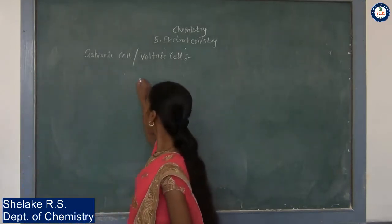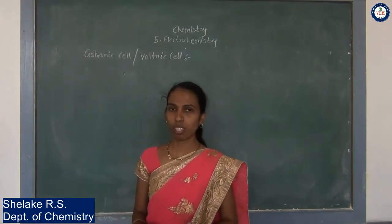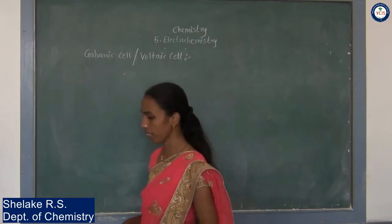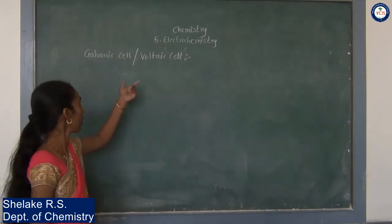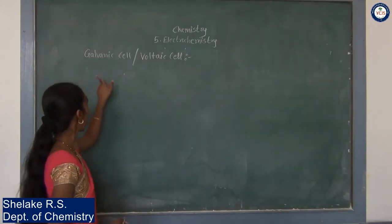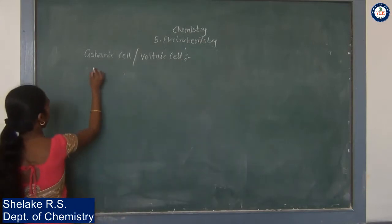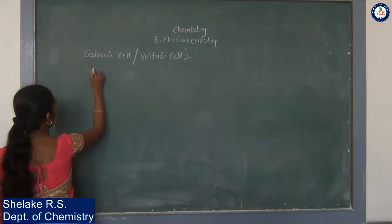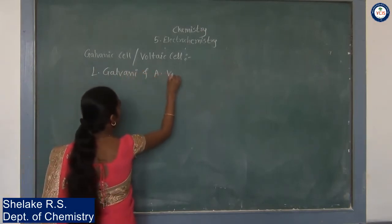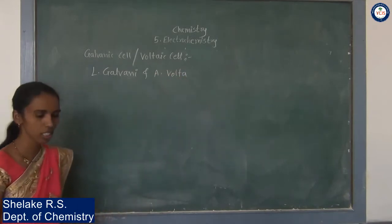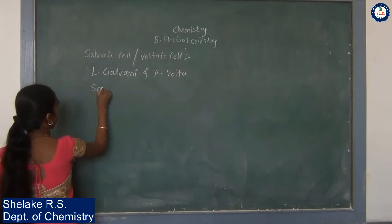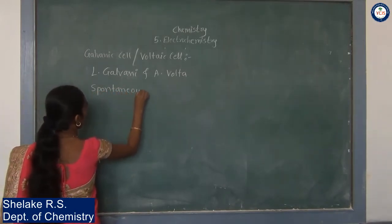The next point of this chapter is the galvanic cell, or the voltaic cell. We have already studied the first type of electrochemical cell — the electrolytic cell. The second type is the galvanic cell or voltaic cell. This cell is named in honor of the scientists L. Galvani and A. Volta. Basically, a spontaneous chemical reaction occurs in the galvanic cell.